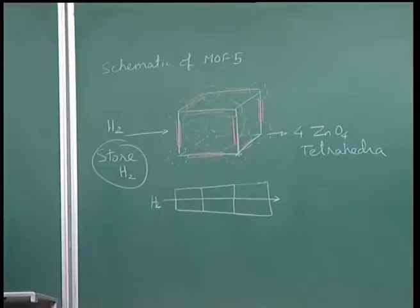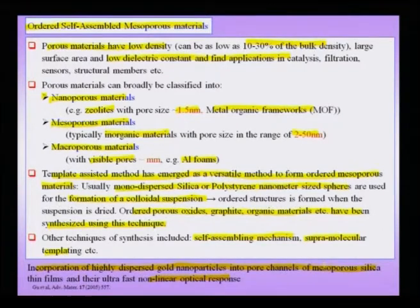Mesoporous and nanoporous materials offer high surface-to-volume ratio for catalysis, size-selective filtration, and can serve as active media for hydrogen storage as in MOF-5. Incorporating secondary particles like gold nanoparticles in mesoporous silica channels enables nonlinear optical responses. Ordered self-assembled mesoporous and nanoporous materials are finding very important applications and are an important class of materials in their own right.